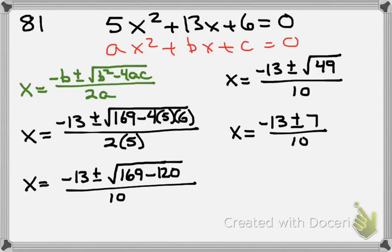So that's going to give me X equals negative 13 plus 7 over 10, and negative 13 minus 7 over 10.